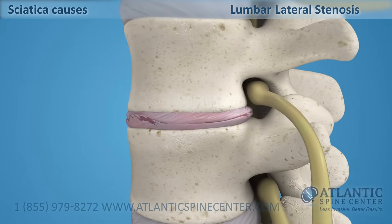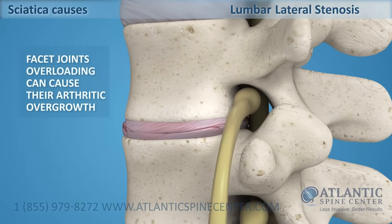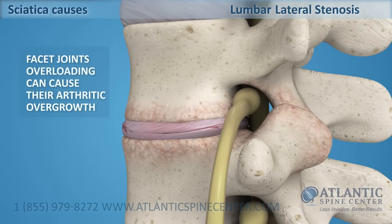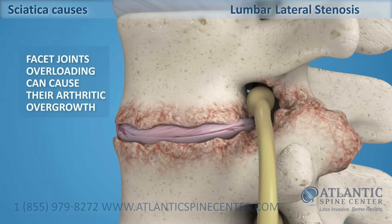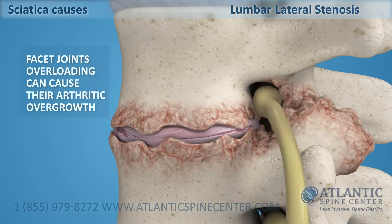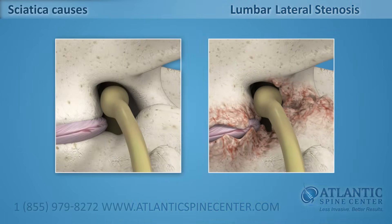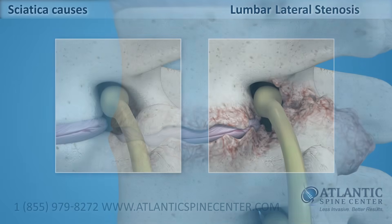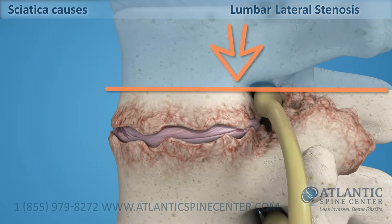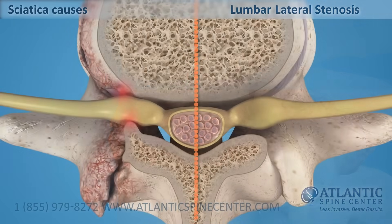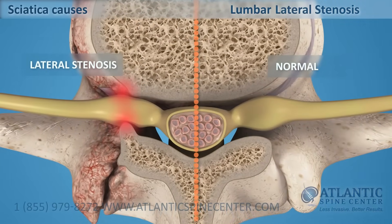Disc degeneration and facet joints overloading can cause their arthritic overgrowth. This resultant loss of space in the foramen can cause squeezing or pinching of the nerve roots as they exit the spine. This condition is called lateral stenosis.